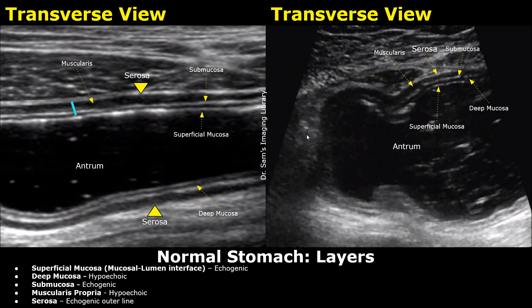First, we will look at the layers of the stomach seen on ultrasound. The layers and their appearance are similar to small bowel. These images show the normal antrum of the stomach in transverse plane. The lumen is filled with fluid, which is why it appears mostly anechoic. This image is obtained with a high-frequency linear probe with good image quality, and we are able to see all the layers separately.